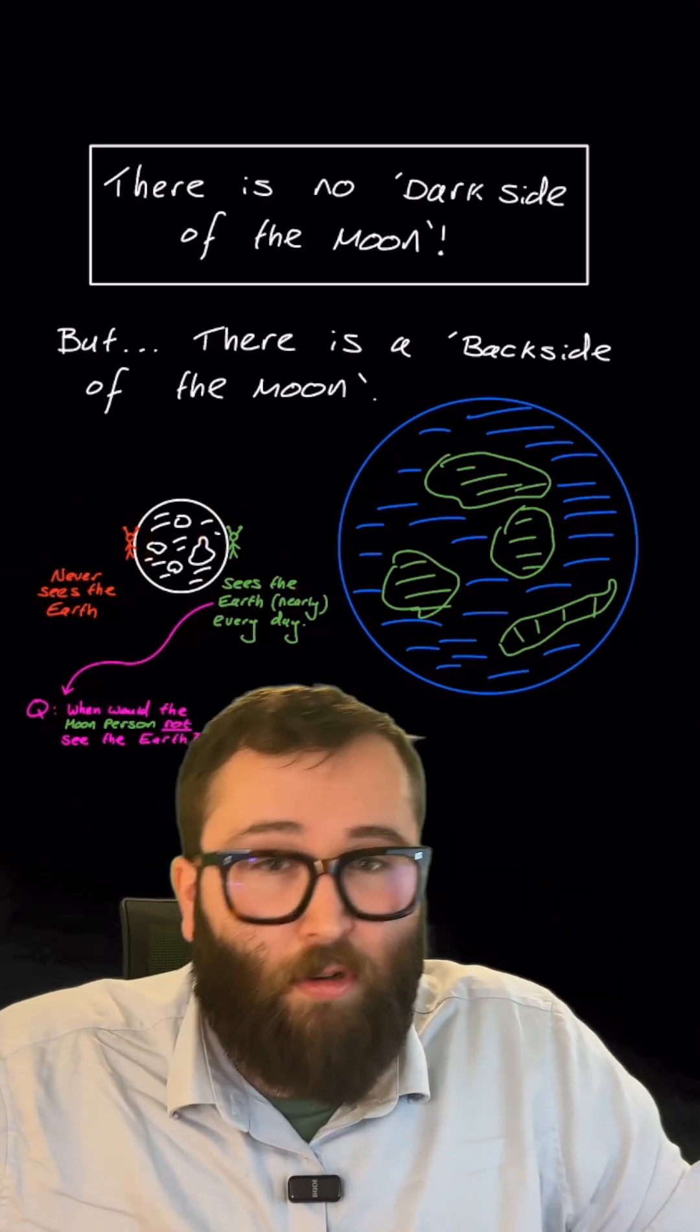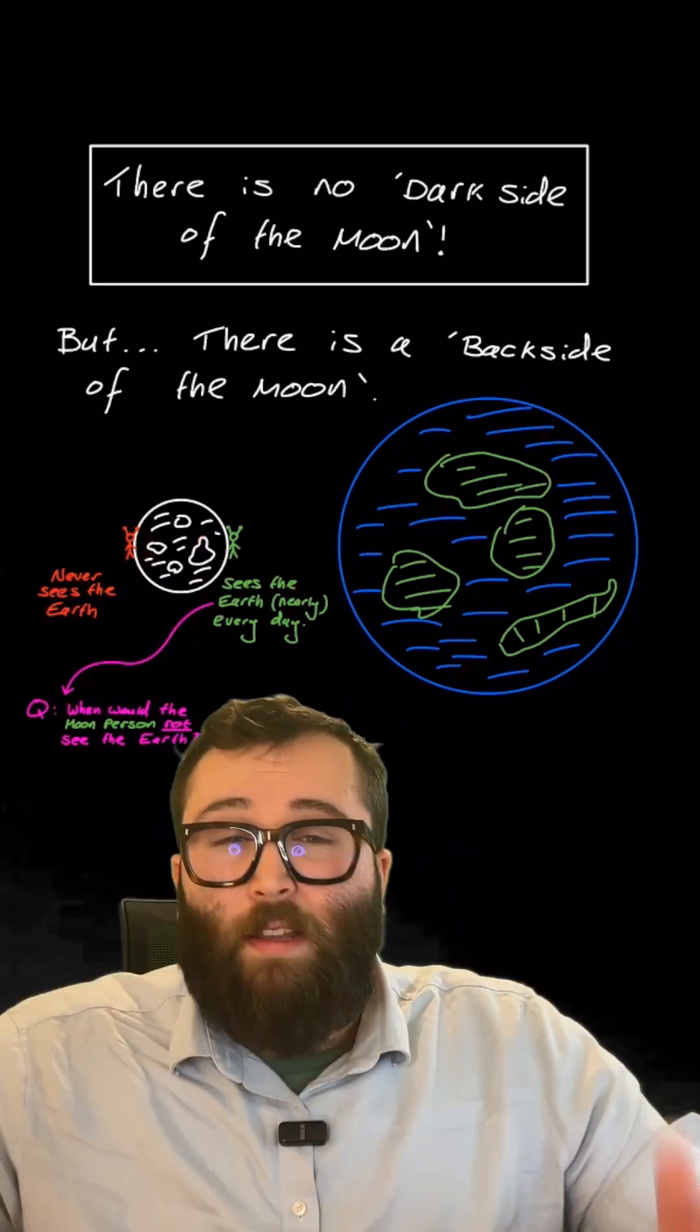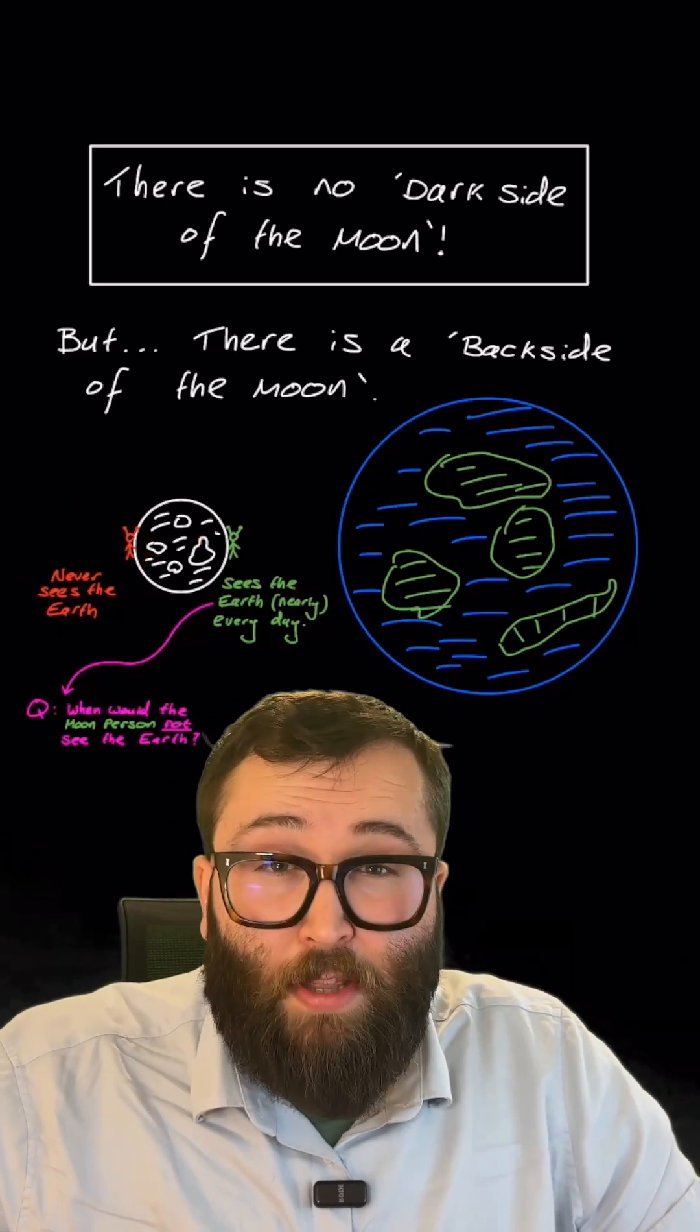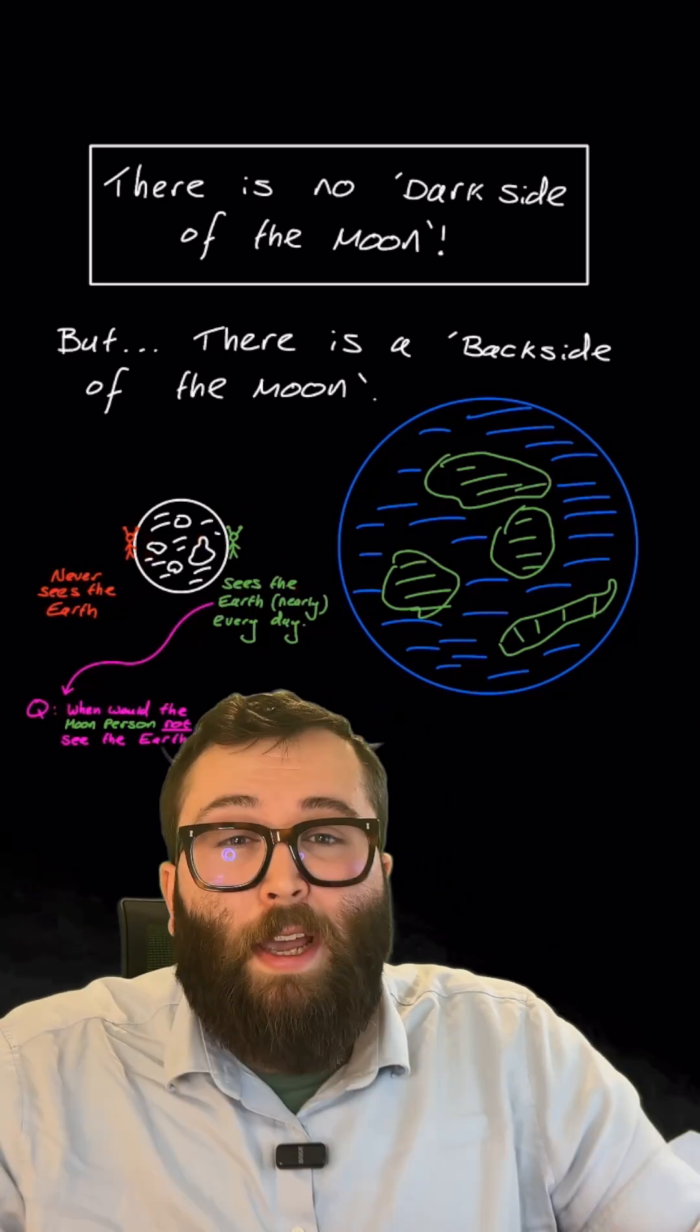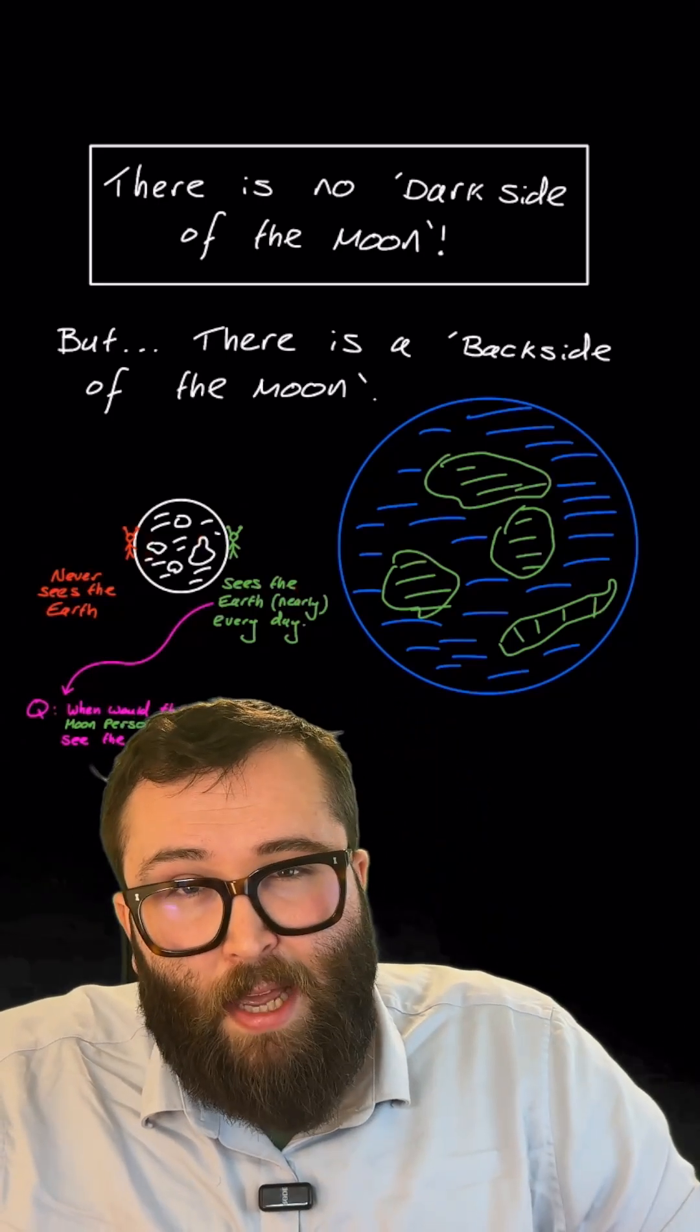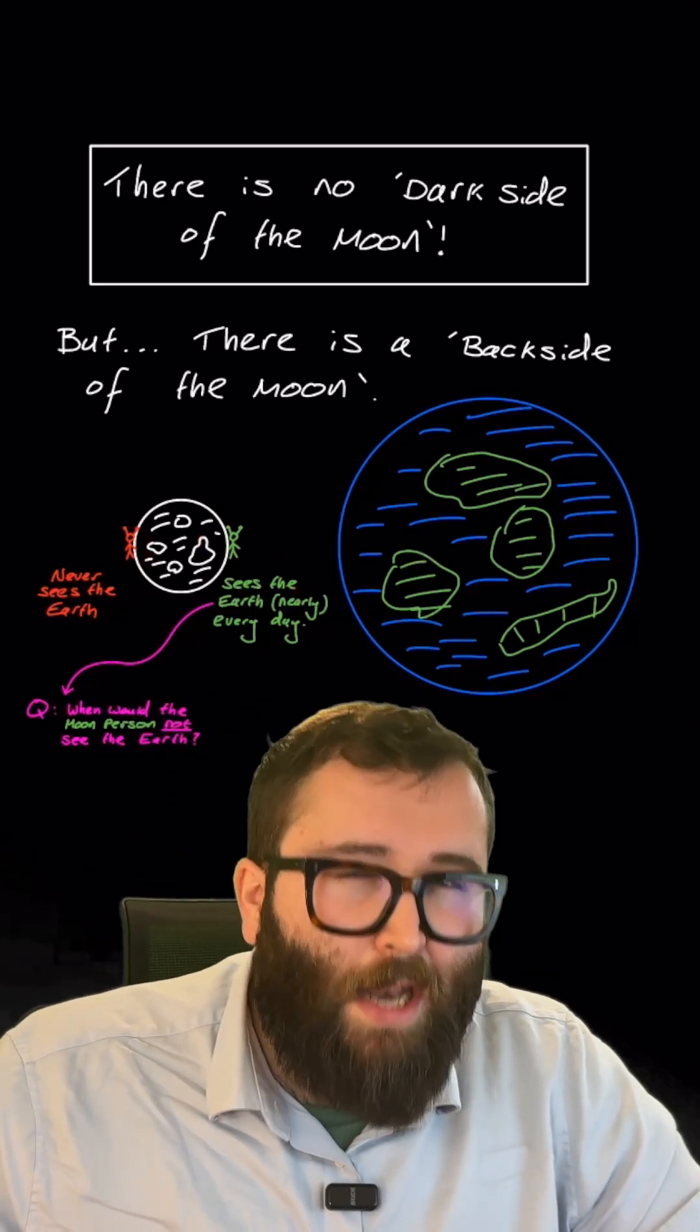Therefore this red guy I've drawn on the left side of the moon will never see the earth in the sky because he is living on the back side of the moon, the bit that never looks towards the earth. However, the green person will almost always be able to see the earth in the sky, apart from one time in the lunar cycle. Can you tell me when that will be?